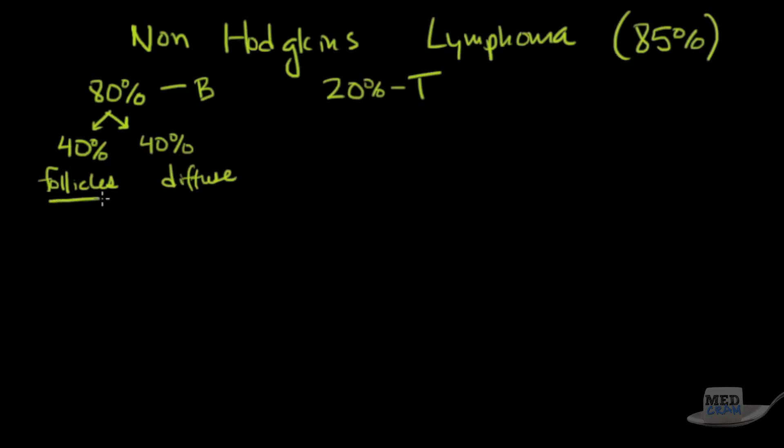So follicles, that means they actually look like the parts of lymph nodes, which is good because that's a mature effect of the lymph tissue. Whereas if it's diffuse, that's not good. That means it's more primitive and not as differentiated. So that's not a good finding.